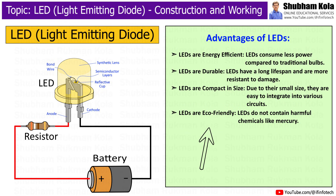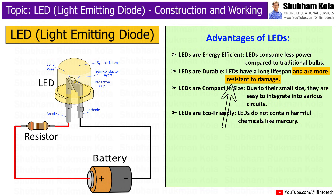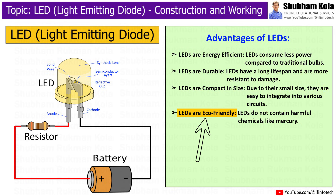Next, we will see the advantages of LEDs. LEDs are energy-efficient — they consume less power compared to traditional bulbs. LEDs are durable — they have a long lifespan and are more resistant to damage. LEDs are compact in size, and due to their small size, they are easy to integrate into various circuits. LEDs are eco-friendly — they do not contain harmful chemicals like mercury.